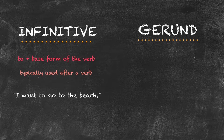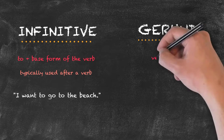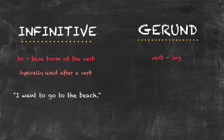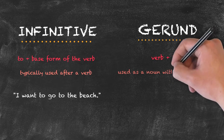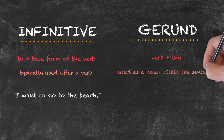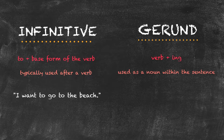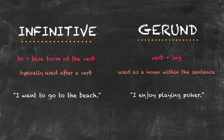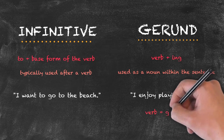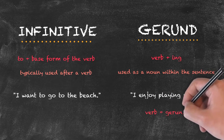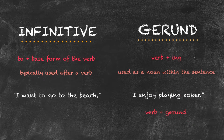We also have our gerund. The gerund is a verb followed by '-ing', but specifically used as a noun within the sentence. We have a verb plus a gerund: I enjoy playing poker. The main verb is 'enjoy', and although 'playing' looks as if it's a verb, it's actually used as the noun within the sentence.